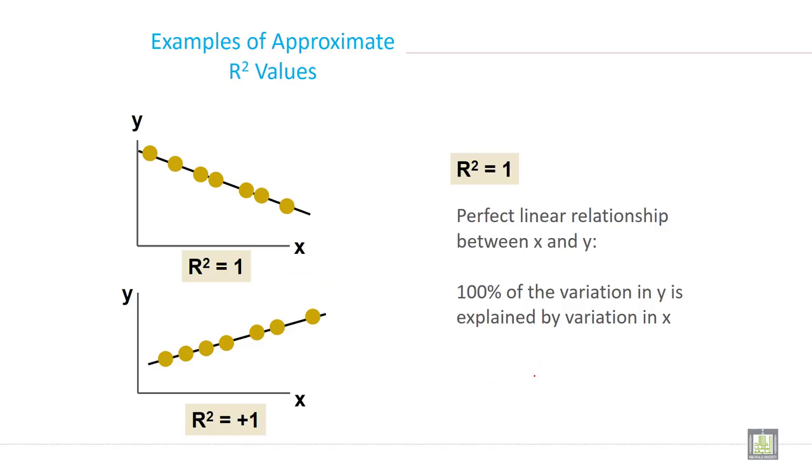Example of approximate R² values. If R² equals 1, perfect linear relationship between X and Y. And if R² is 1 and it goes toward upward, 100% of the variation in Y is explained by variation in X. So this is just two examples through the scatter diagram.